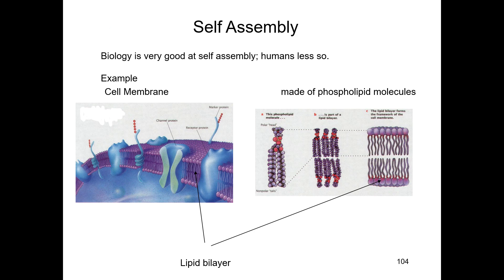First, self-assembly. Self-assembly is a very important technique in biology. The self-assembly technique involves biological processes, and a good example of that is the cell membrane. In cell membranes we have lipid bilayers that are made up of phospholipid molecules. That is a very good example of self-assembly — molecules assembled by themselves, making nanostructures. This technique is particularly related to biology and biomedical processes linked with nanotechnology.